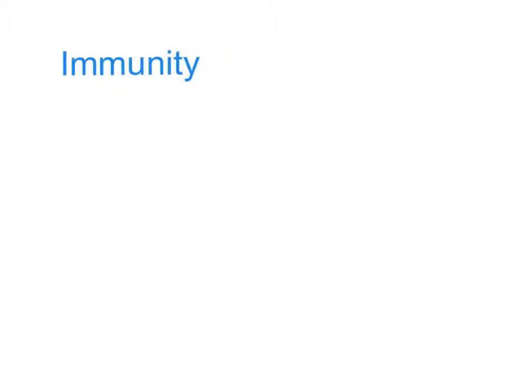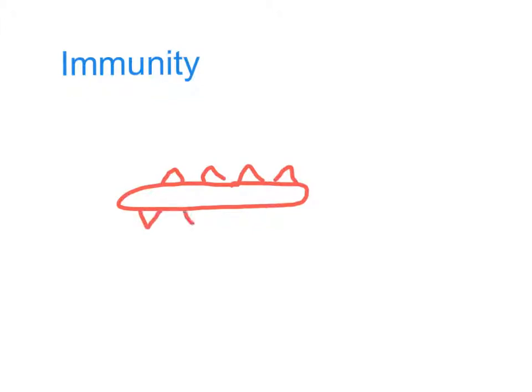First let me show you what a bacterium looks like. Viruses are a little bit different but the same principles apply. I'm going to draw this bacterium as a long rod-shaped thing here, and I'm going to put some of these pointy things on the surface of the bacterium. These are called antigens and all bacteria have them. So the spiky things there are antigens. Now if we can destroy those antigens we will kill the bacterium. So how do we go about destroying those antigens?